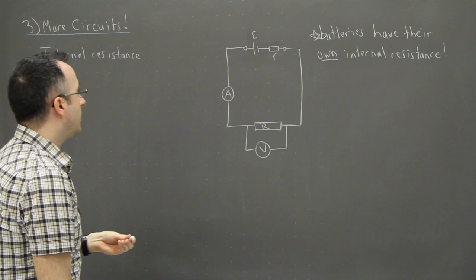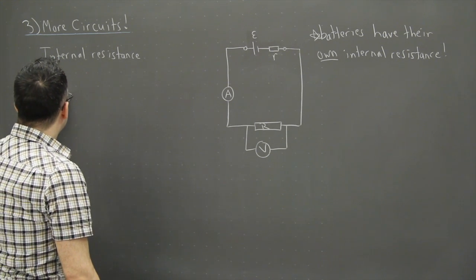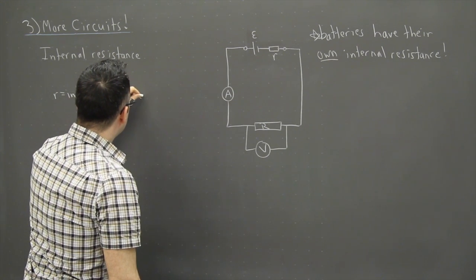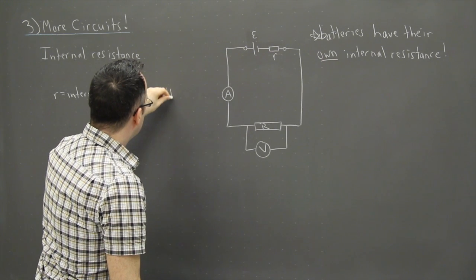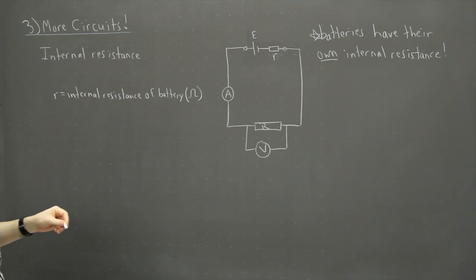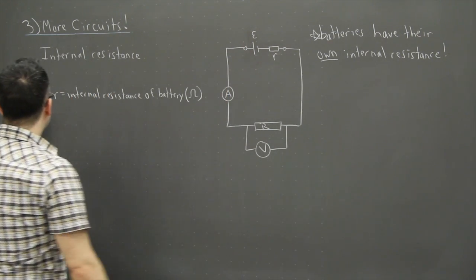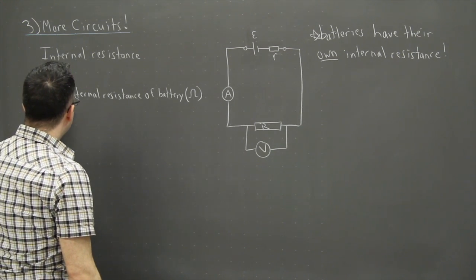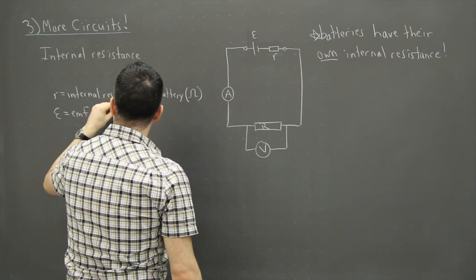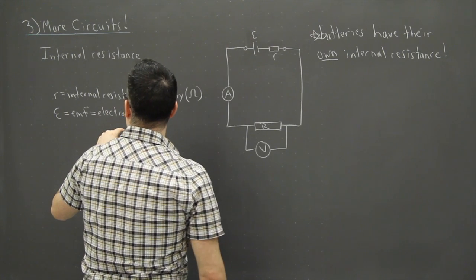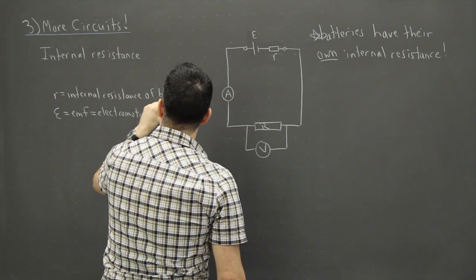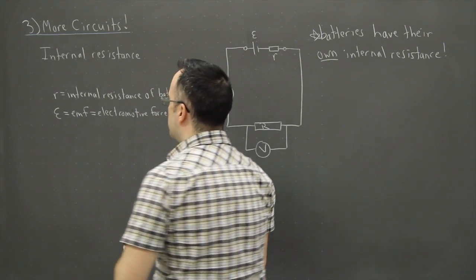Let's write down what these different things are. R equals the internal resistance of the battery, and that's measured in ohms. Now this weird symbol here, this E looking thing, this is the EMF, which is called the electromotive force.